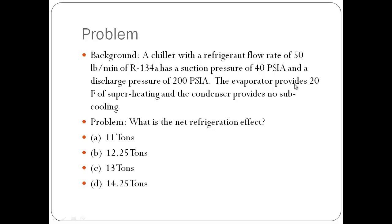A chiller with a refrigeration flow rate of 50 pounds per minute of R134A has a suction pressure of 40 psi absolute and a discharge pressure of 200 psi absolute. The evaporator provides 20 degrees Fahrenheit of superheating and the condenser provides no subcooling. What is the net refrigeration effect?